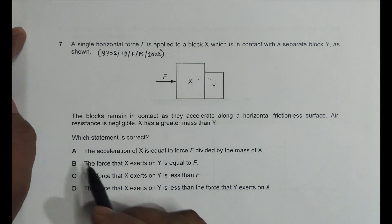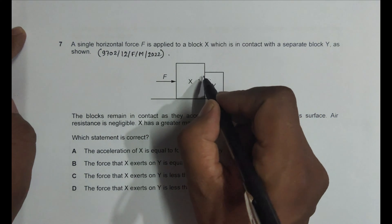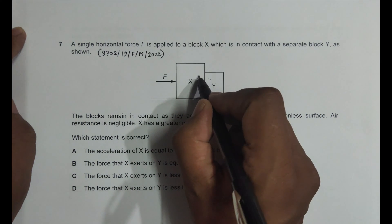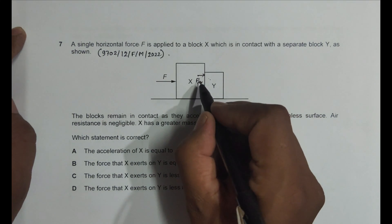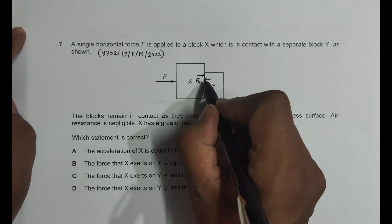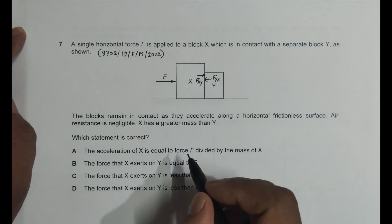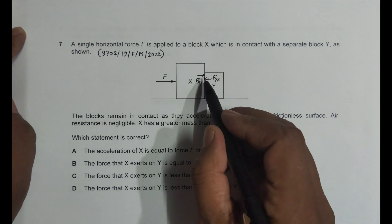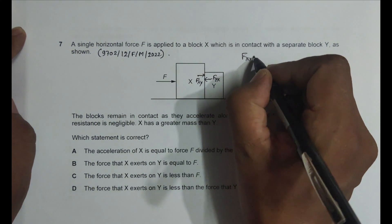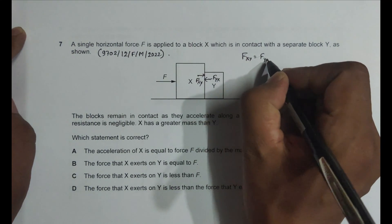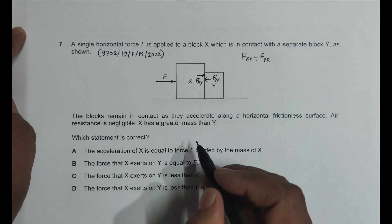The question asks which statement is correct. When force F is applied to X, the force applied by X on Y is F_XY, and the force applied by Y on X is F_YX. These two are contact forces — they are an action-reaction pair by Newton's 3rd law. Therefore, F_XY must equal F_YX.